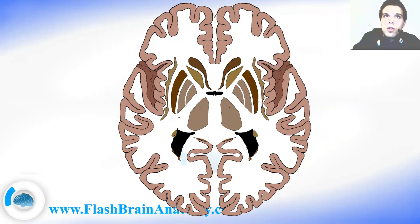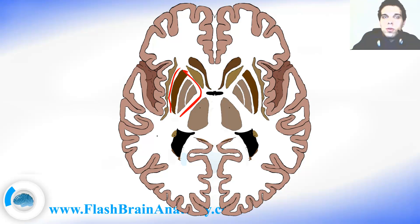This part of white matter that divides the pallidum from the thalamus and the caudate nucleus is called the internal capsule. This over here is the external capsule. And this over here is the extreme capsule.